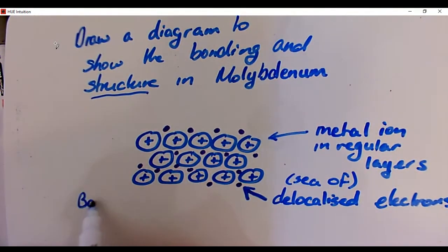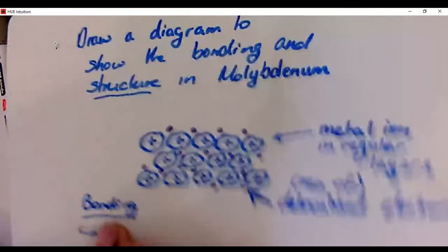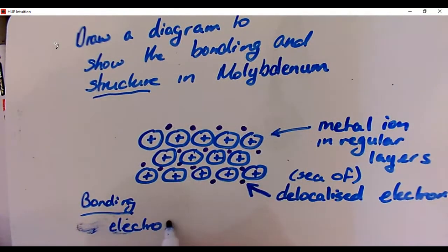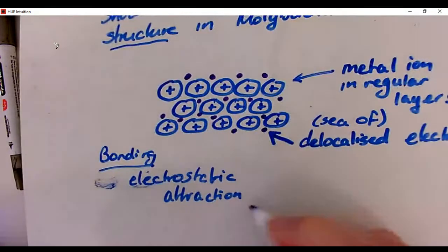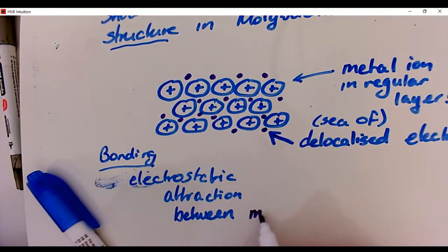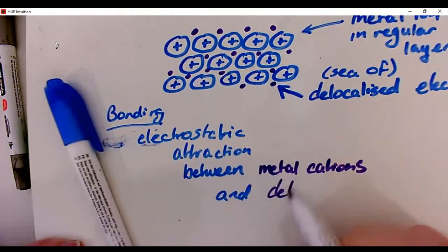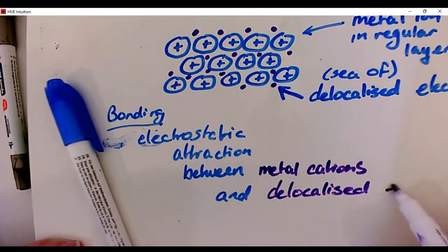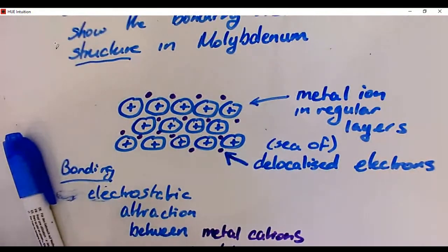That shows you the structure, but it's not telling you anything about the bonding. You need to actually write the bonding part: the bonding is the electrostatic attraction between the cations (metal ions) and the delocalized electrons. You need to be able to do that.